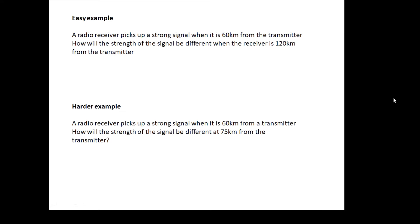An easy example: a radio receiver picks up a strong signal when it's 60 kilometers away. How will the strength of the signal be different if you're 120 kilometers away? Well, if the distance is double then the intensity will be, now it won't be a half, it will be a quarter. And so a quarter intensity, in other words it will be 25 percent of what it was.